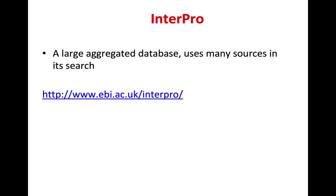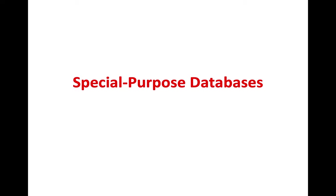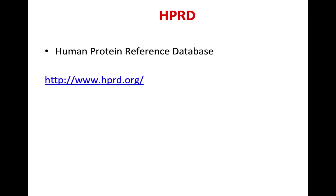Domain databases exist because proteins have domains. InterPro from EBI is a large aggregated database using many sources in its search — useful when your target protein has more than one domain. PROSITE is also an example, part of the UniProt/ExPASy system. Special purpose databases include HPRD — the Human Protein Reference Database — where you can find everything about human proteins.